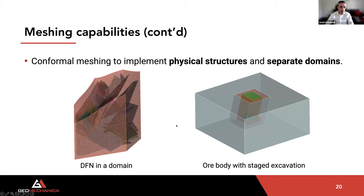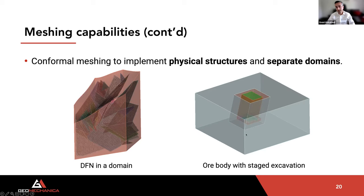You can also perform conformal meshes to implement physical structures such as natural discontinuities or separate domains. For example, a domain can have a discrete fracture network (DFN) embedded into it, representing the natural discontinuities or geological structural model explicitly embedded into the 3D tetrahedral mesh. You can also respect lithological units or different rock units such as in a staged ore body excavation.